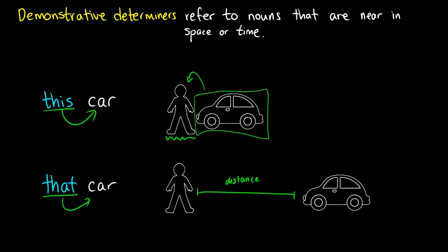So the difference between this and that is either a closeness or furtherness in space or time. These are our singular demonstratives. When we say this car or that car we're talking about one particular thing, but we have plural versions of these two.